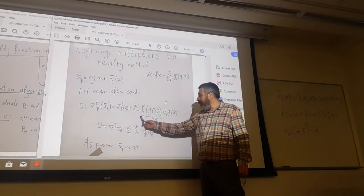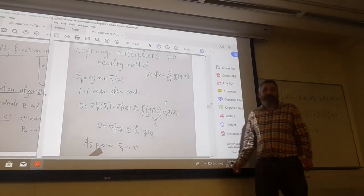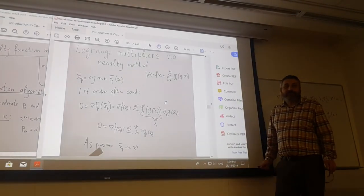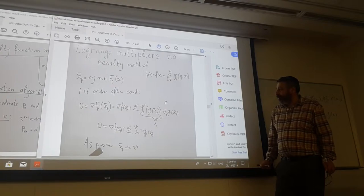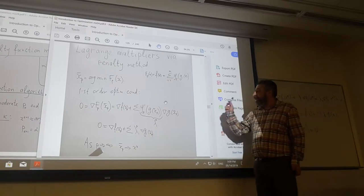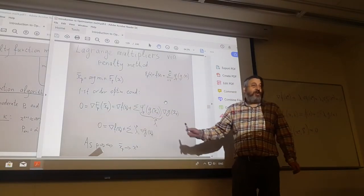So we denote derivative of phi as lambda i. At x star, active constraints - the constraints are 0, but the derivatives are not, right?